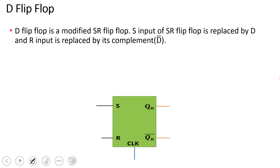What do we do? There is an S input — I will use D. Then there is R, and D is the complement. So in the SR flip-flop, the S input is going to replace D, and the R input is D bar, that is D complement.